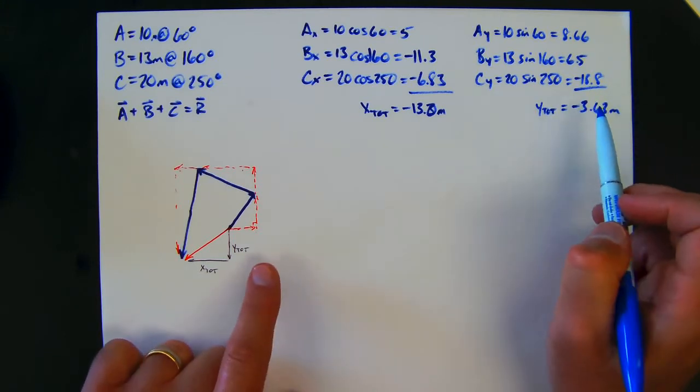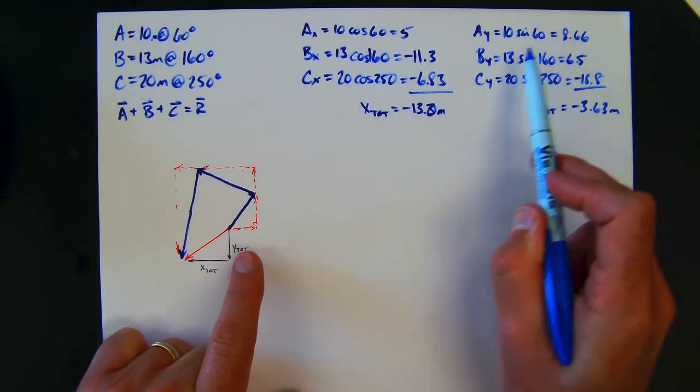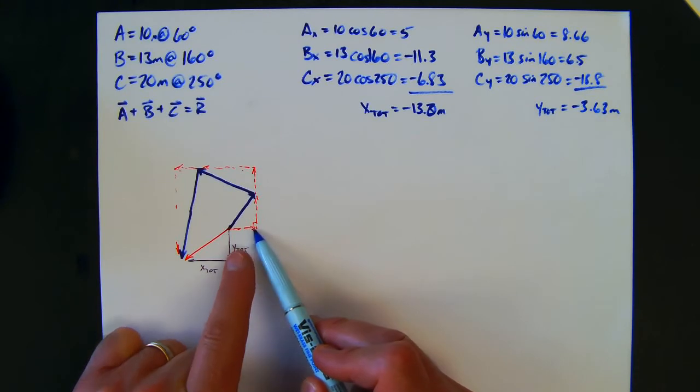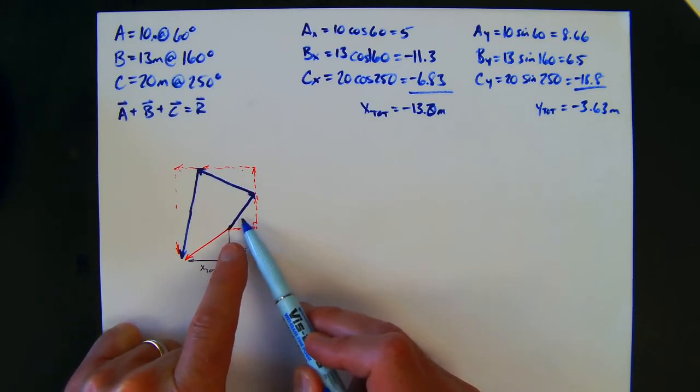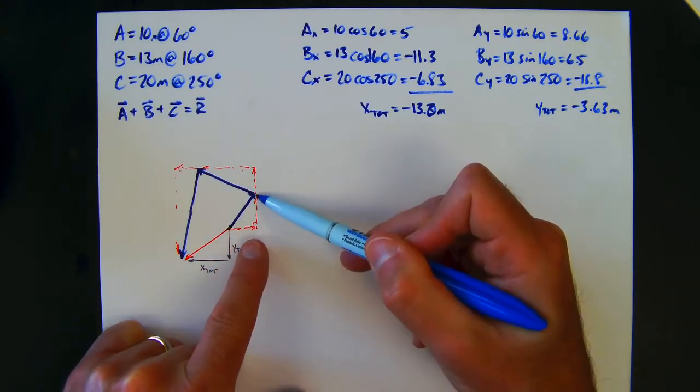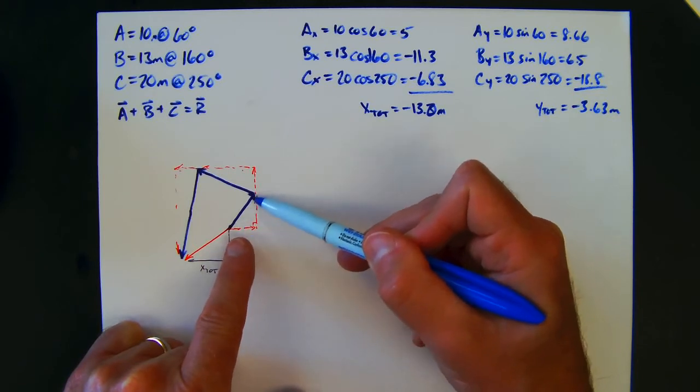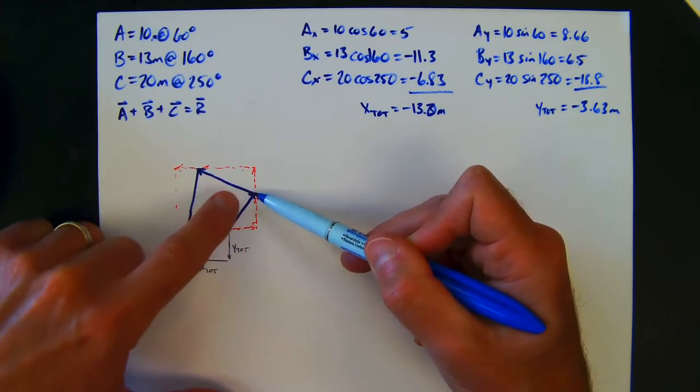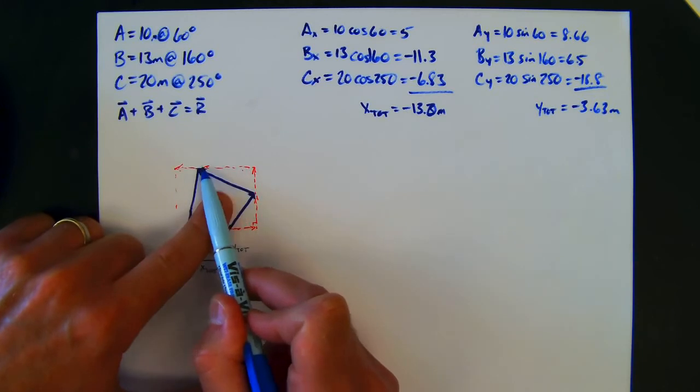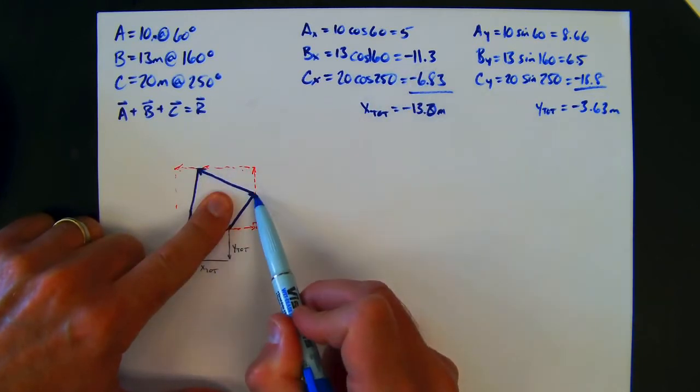And if you look at those, those should be fairly representative of whatever your picture is. So since I have this is my Ax value, it's 5, it's shorter than the 10. This is 8.66, it's shorter than the 10 but bigger than the 5. Same thing for the B value—I have a negative x value, negative 11.3, and a positive y value 4.45.